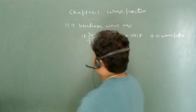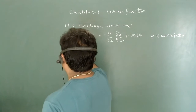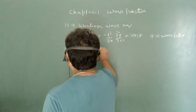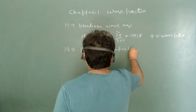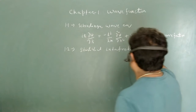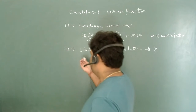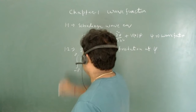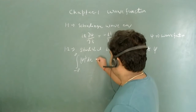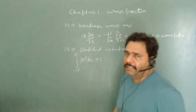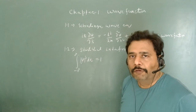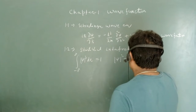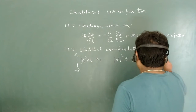In the second section of this chapter, it gives the statistical interpretation of ψ. It is discussed that if you integrate |ψ|² dx from minus infinity to plus infinity and it equals one, then ψ is normalized, and |ψ|² can be treated as probability density.